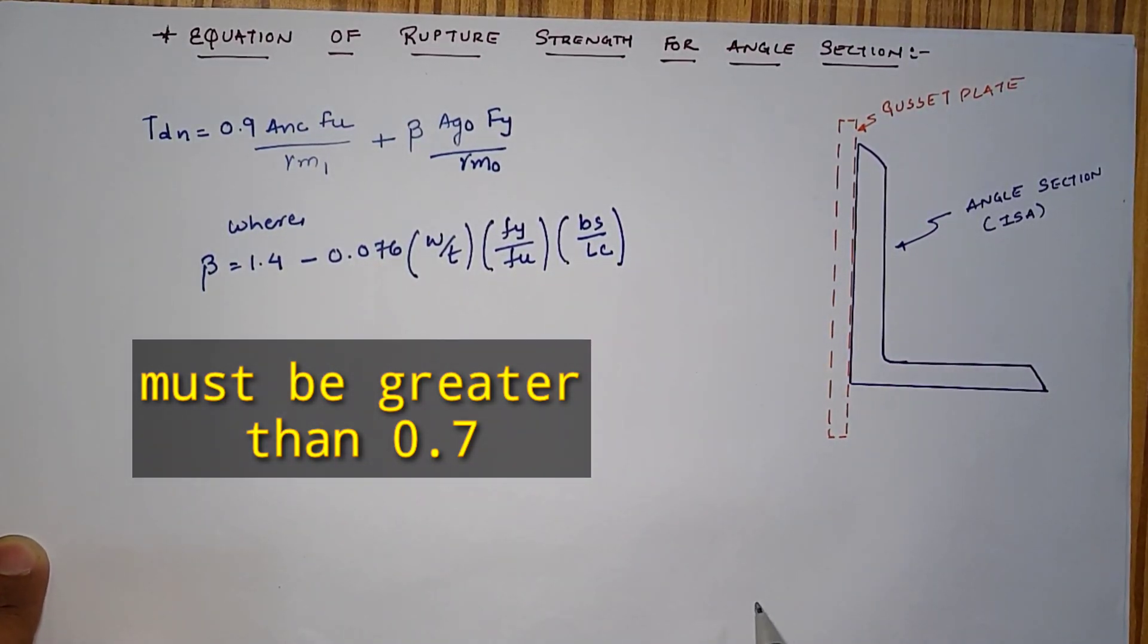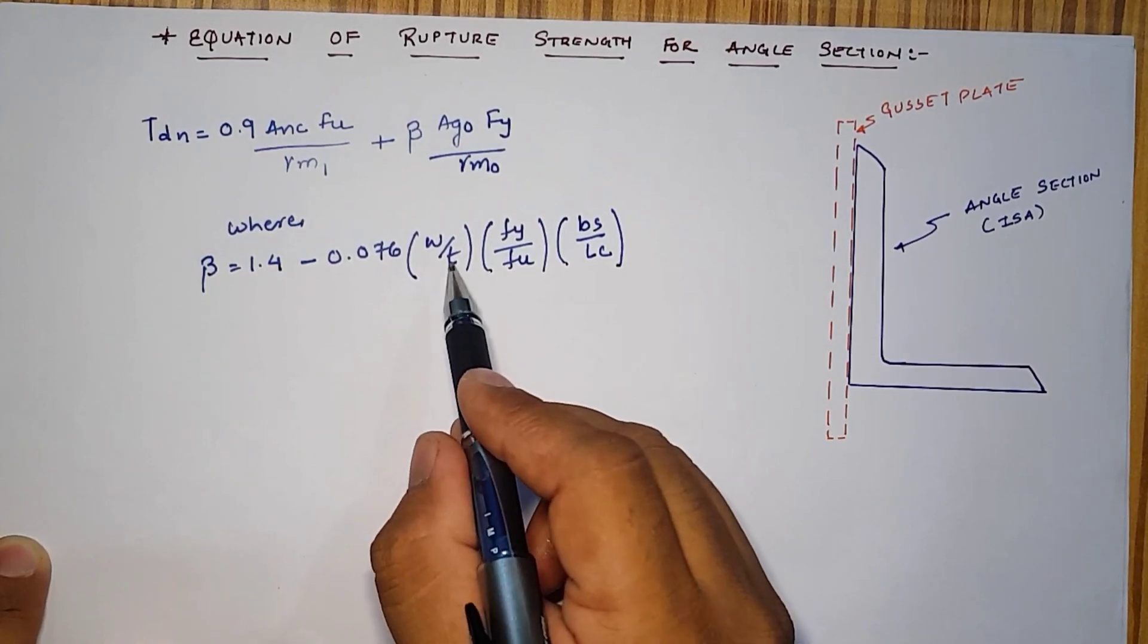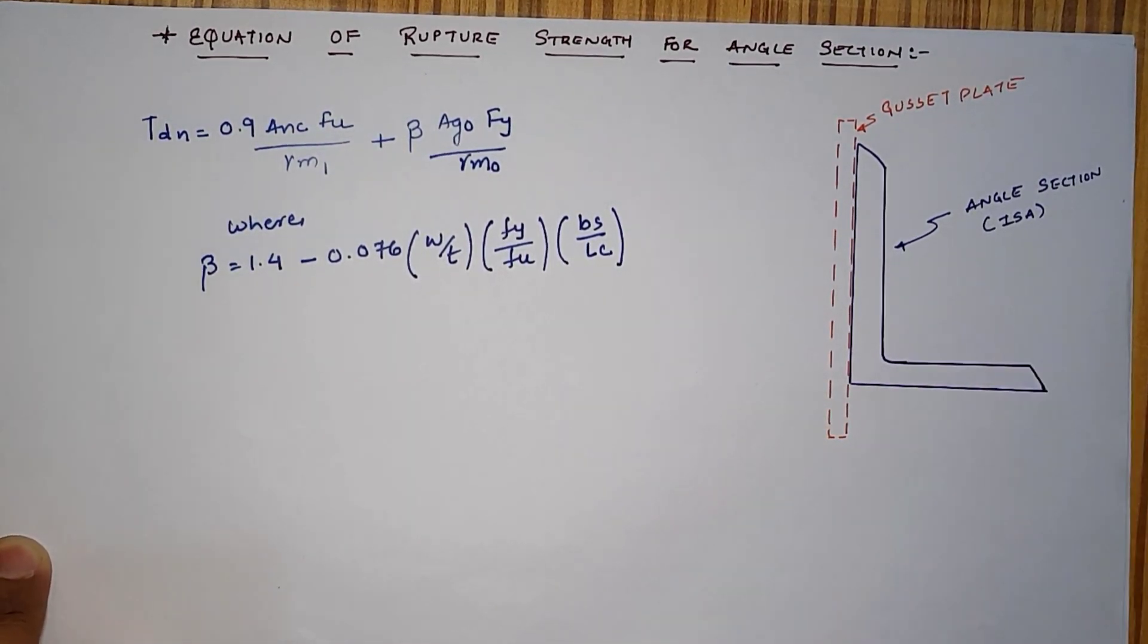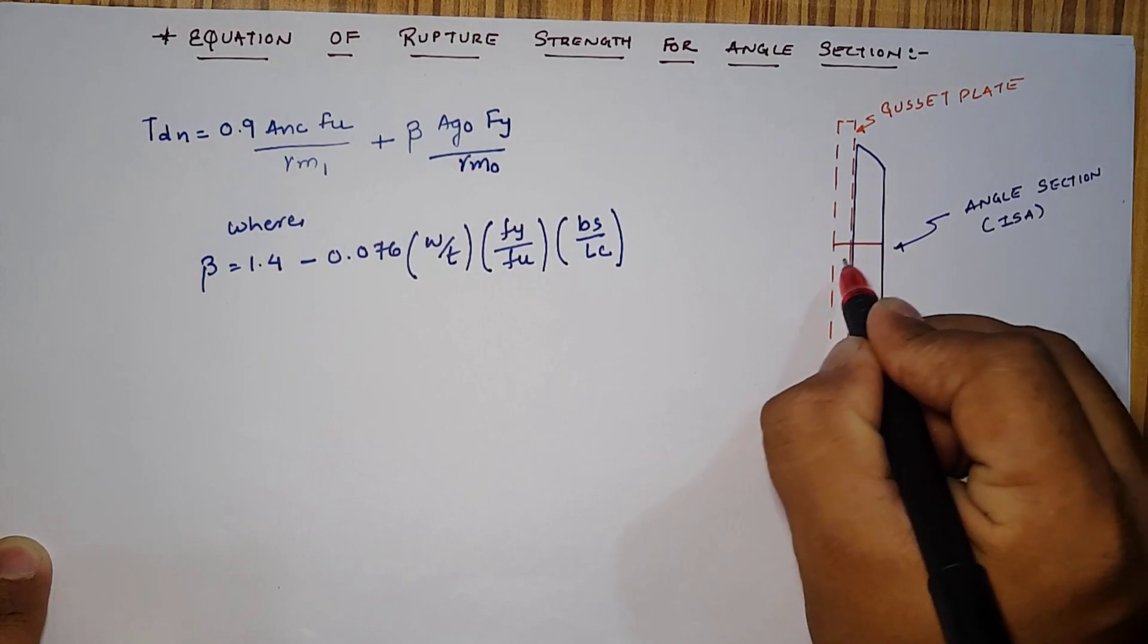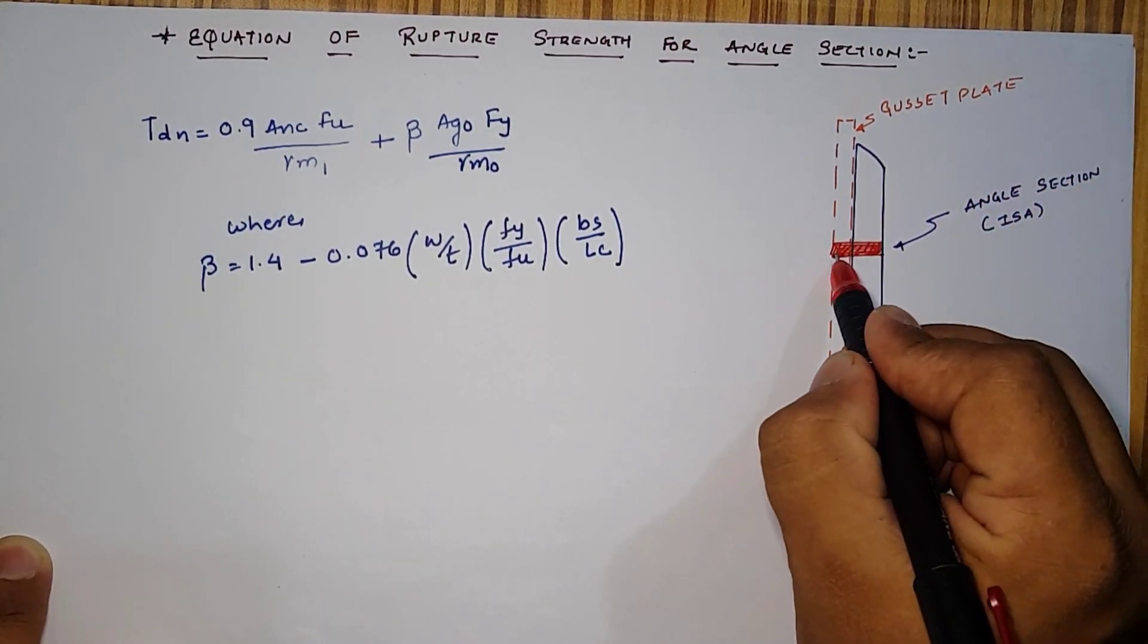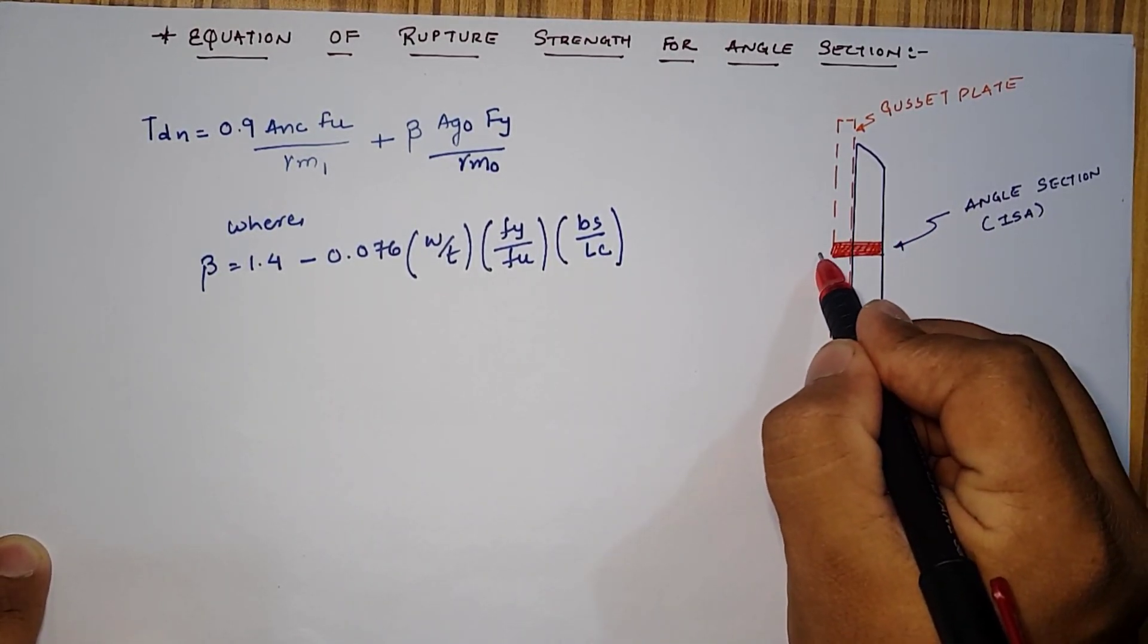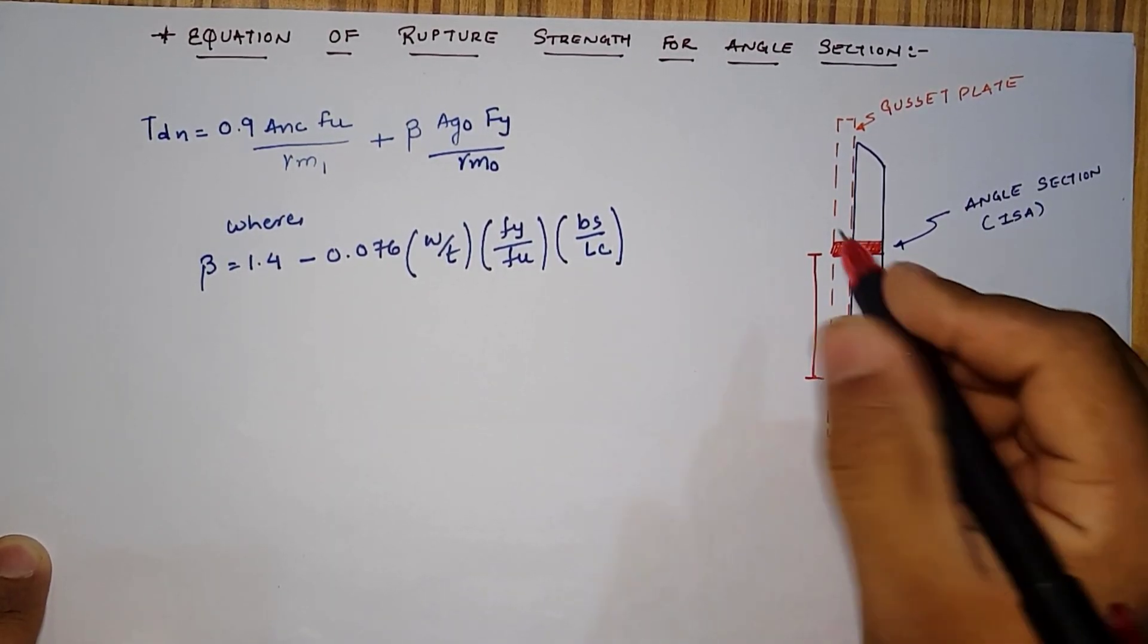Now we have to learn about all the notations which is going to be used for the angle strut connection. Assume that the bolt is connected by the gusset plate as shown in the figure.